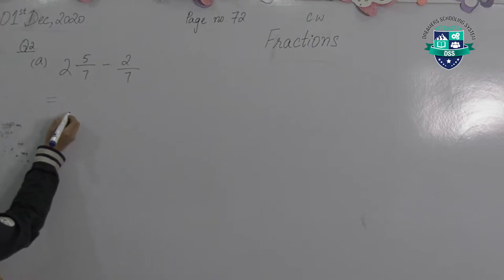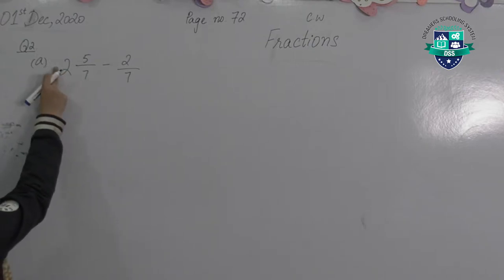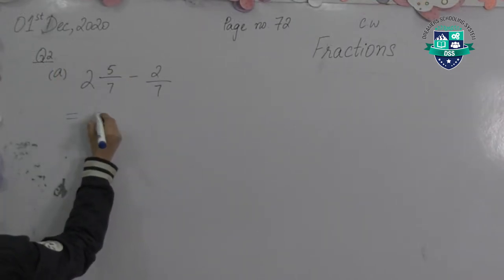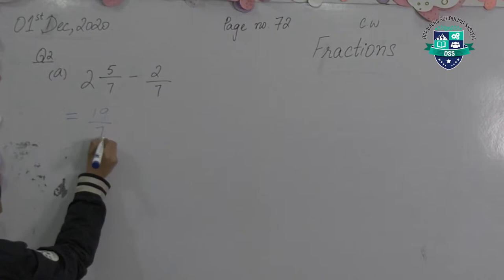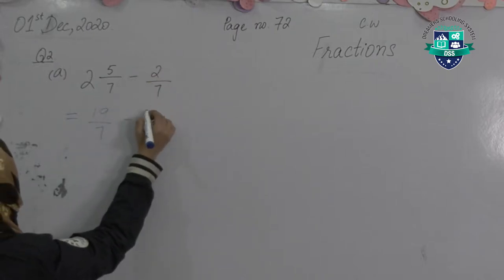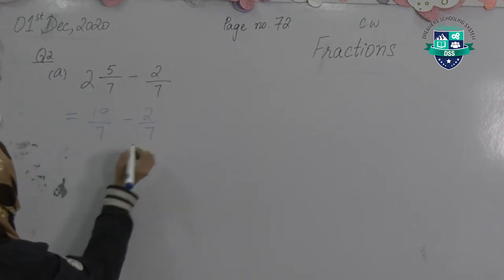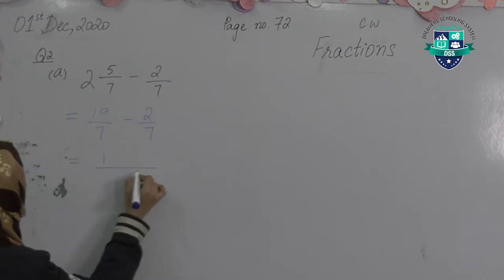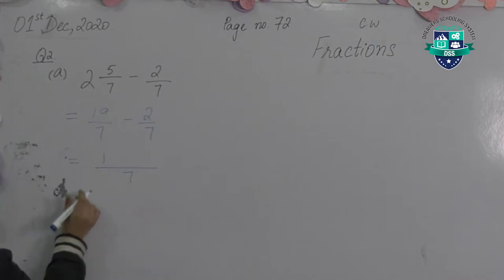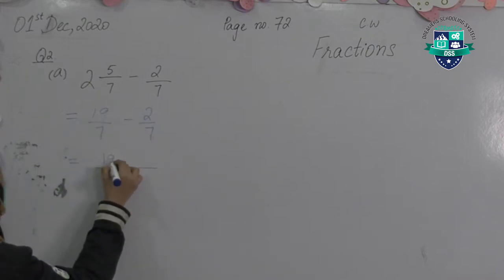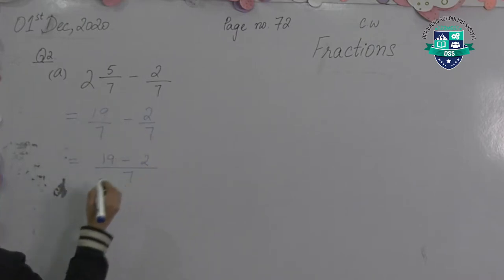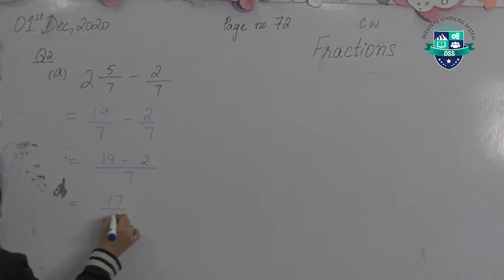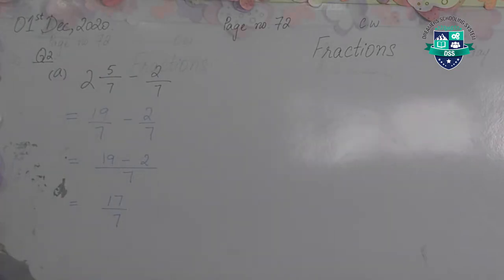First we'll put the sign of equal. 7 twos are 14, 14 plus 5 is 19, so we get 19 by 7 minus 2 by 7. The improper fraction will come as it is. Since the denominators are the same, we'll put a dash and write the denominator 7. 19 minus 2: the numerators will be subtracted, 19 minus 2 equals 17 by 7 is the answer.